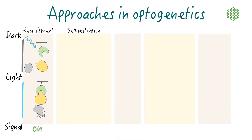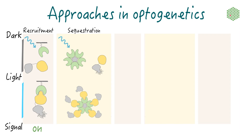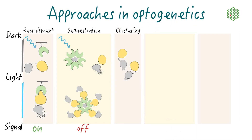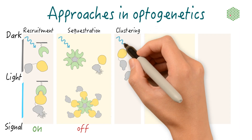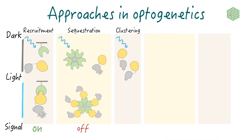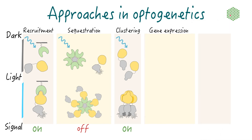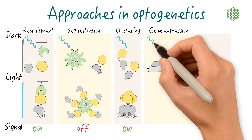Using the same principle, a protein of interest can also be sequestered away from its site of action. Removing a protein from its natural localization into a different cellular compartment essentially removes this protein's function. Some photosensitive proteins tend to form big homomeric clusters as a result of light activation. If the target protein is catalytically active when present in high density, then clustering results in the formation of active signaling hubs inside the cell. Optogenetics can also be used to control gene expression; transcription of a gene of interest can be regulated by making use of these kinds of dimerization strategies.